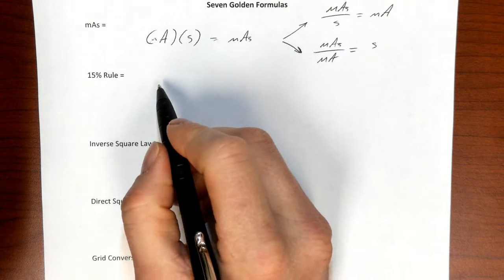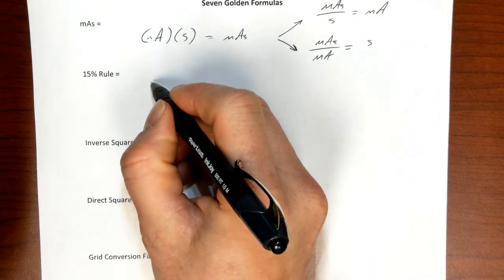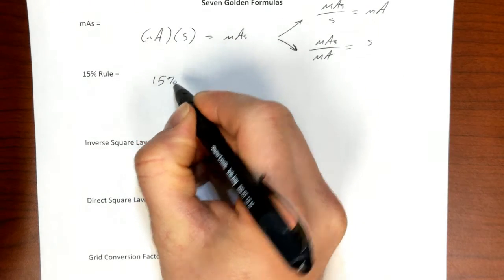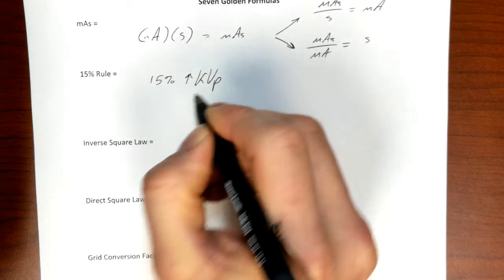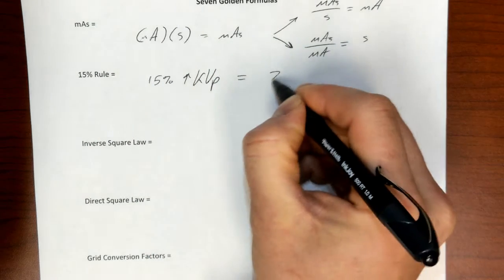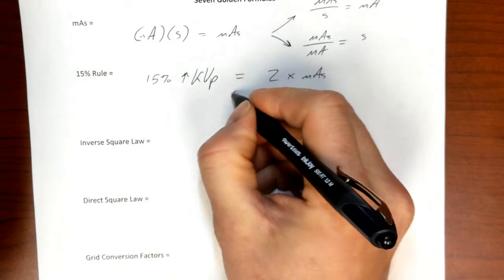The second formula is really more best thought of as a logic statement or maybe an algorithm, and it's the 15% rule which deals with KVP. So 15% increase in KVP equals 2 times mAs.